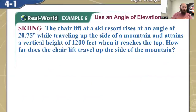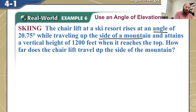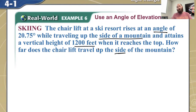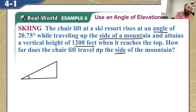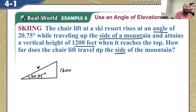Here we want to use an angle of elevation. The chairlift at a ski resort rises at an angle of 20.75 degrees while traveling up the side of a mountain and attains a vertical height of 1200 feet when it reaches the top. How far does the chairlift travel up the side of the mountain? We're trying to model this with a triangle. From the horizon, from the straight line across, the chairlift is going up at 20.75 degrees. The height of the mountain is 1200 feet. We want to find the distance of this side here. We are not doing inverse here, but we are finding stuff with angle of elevation.